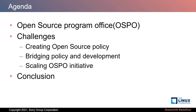This is today's agenda. This talk consists of three sections. First, we will explain Open Source Program Office. Second, we will explain our challenges of OSPO: creating Open Source Policy, bridging Policy and Development, and scaling OSPO initiative. Finally, we will conclude this talk with the things we learned from OSPO activity.